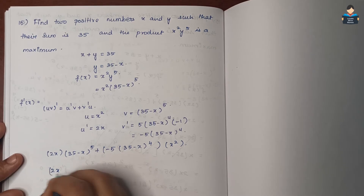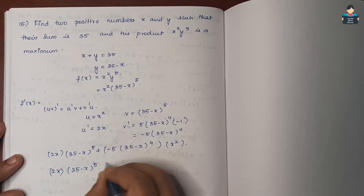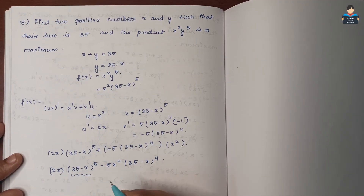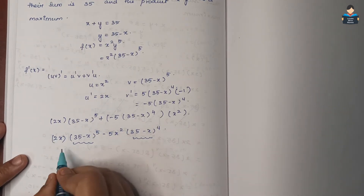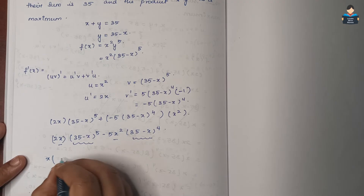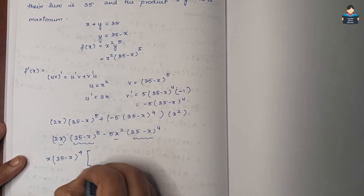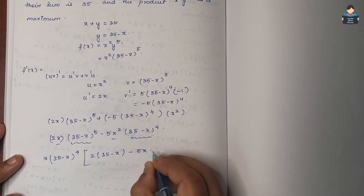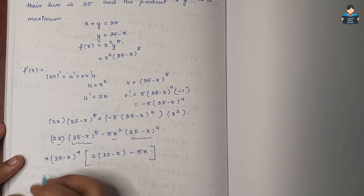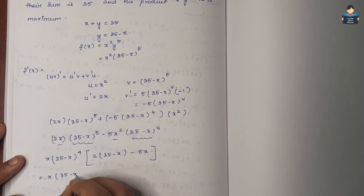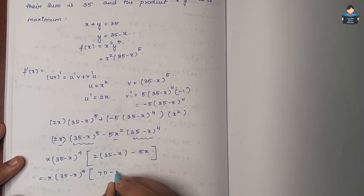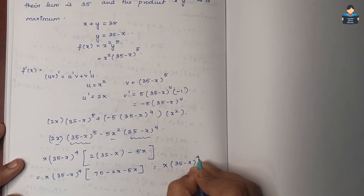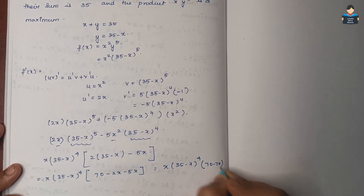Simplifying: f'(x) = 2x(35 minus x)⁵ minus 5x²(35 minus x)⁴. Taking x(35 minus x)⁴ as common: f'(x) = x(35 minus x)⁴ · (70 minus 7x).